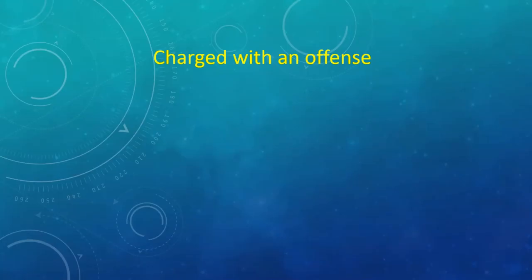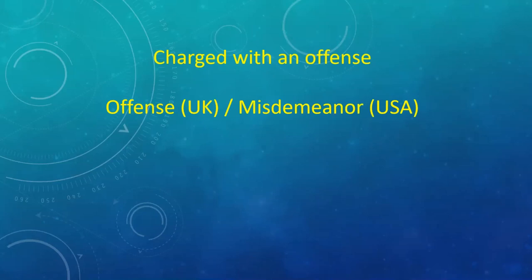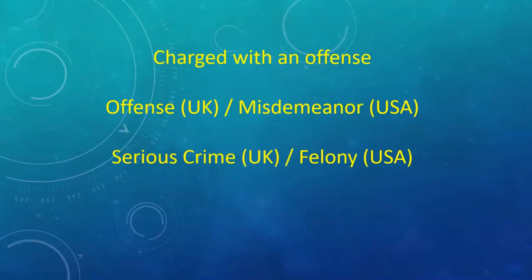If in the end they decide that they have enough evidence to make a case against you, you will be charged with the offense. An offense is a minor crime — perhaps speeding, trespassing on somebody else's private property — very minor offenses that can be paid for by a fine if it's a first offense. In America, it's called a misdemeanor.